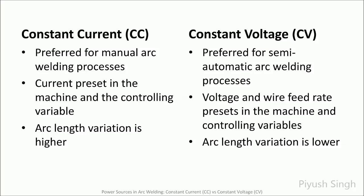If constant current output is used for a semi-automatic process, voltage and the resulting arc length would vary too much. With a drop in voltage, arc length would become very short and the electrode would stub into the plate. Then, as voltage increases, arc length would become very long and the electrode would burn back towards the contact tip. The electrode would be constantly stubbing into the plate and then burning back towards the tip. This is an impracticable situation, making constant current output undesirable for semi-automatic processes.